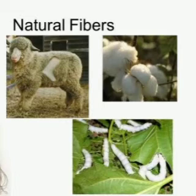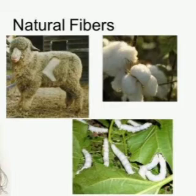Fibers are of two types: natural and man-made fiber. Fibers that are obtained from plants and animals are called natural fibers. Examples of natural fibers are cotton, wool, and silk. We get cotton from the balls of a cotton plant.